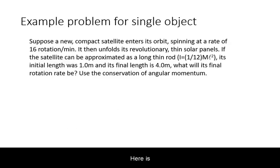Here is a simple problem demonstrating the conservation of angular momentum. We have a satellite that is approximated as a long thin rod rotating about its center that then extends its solar panels and we want to know how this will affect its rotation.